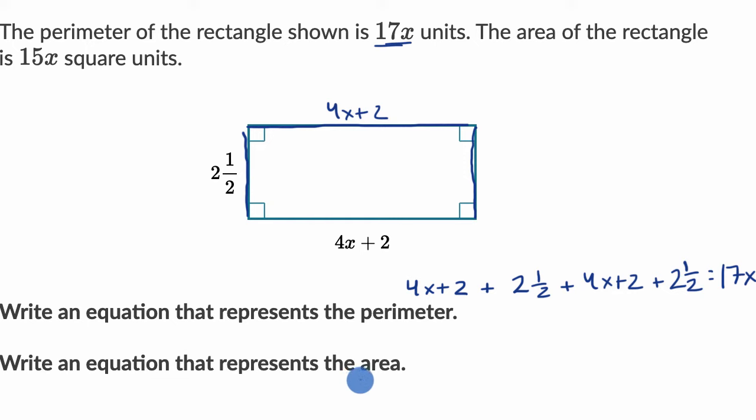So now let's do the same thing for the area. The area of a rectangle is going to be our base times our height, or our height times our base. So we could say it's 2½ times 4x plus two. And then that's going to be our area, which they say is 15x square units. So that's equal to 15x.